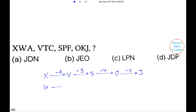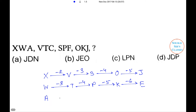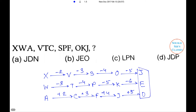Continuing the pattern: w - 3 = t, - 4 = p, - 5 = k, - 6 = e. And a + 2 = c, + 3 = f, + 4 = j, + 5 = o. So the answer is j, e, o — option B is the right answer.